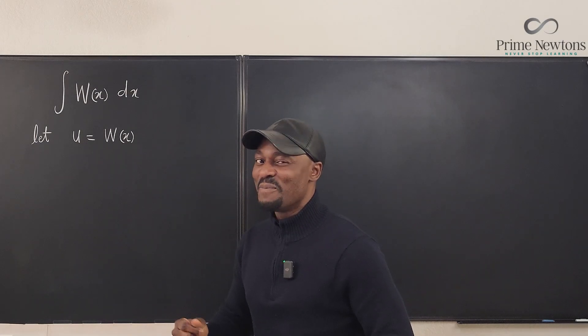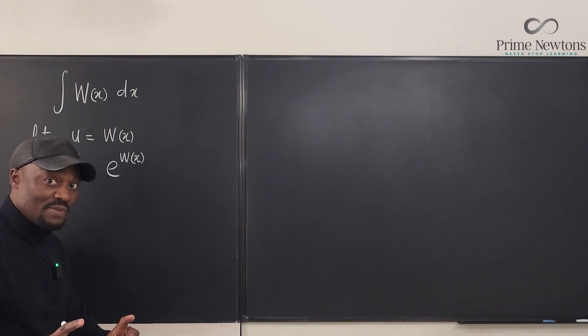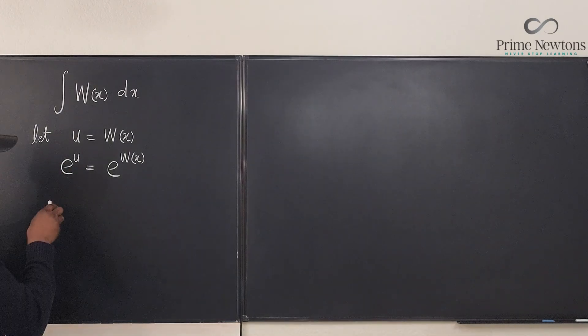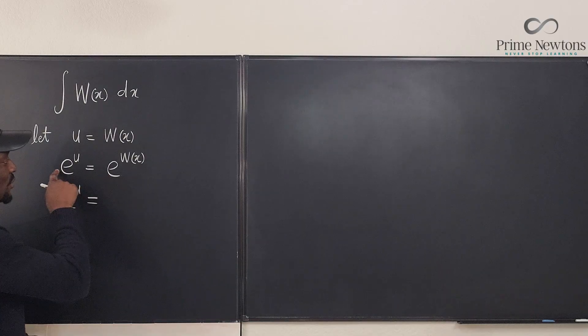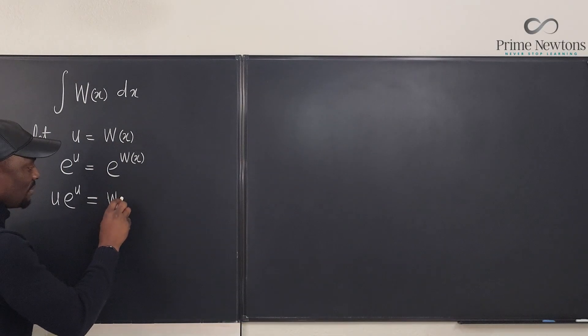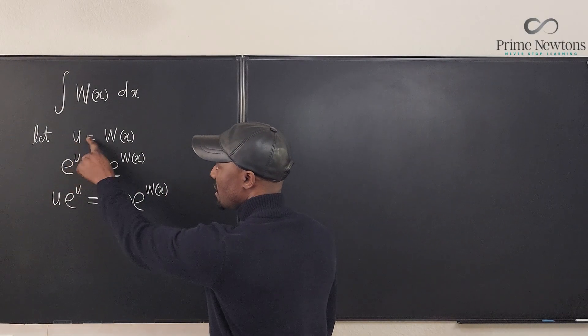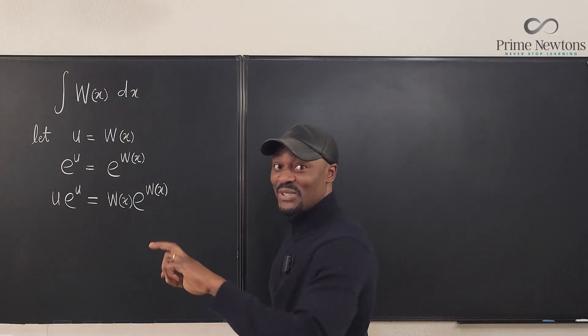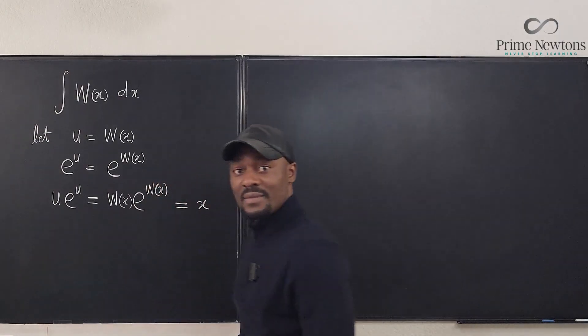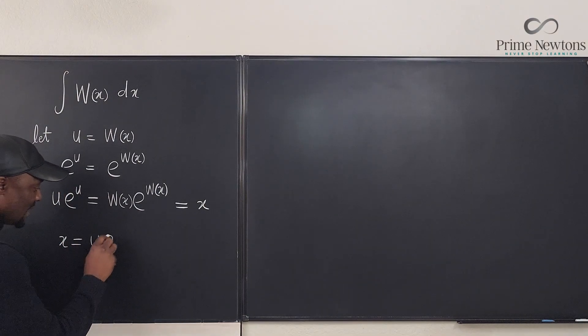So we'll just work with u and then at the end of the day, we come back and substitute back for W of X. So we want to write this in a way that we can work with. It is easy to differentiate and integrate exponential functions. So let's do some manipulations. I'm going to take e of both sides. Now what I'm going to do next is beautiful. I'm going to multiply this by u so that this is u e to the u. But instead of multiplying this by u also, because I said u is W of X, I'm going to multiply this by W of X e to the W of X. It's the same thing because we said u is equal to W of X. But we know that W of X e to the W of X, because they're inverse functions, will give you back your X.